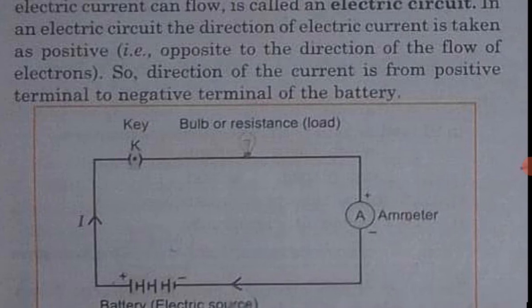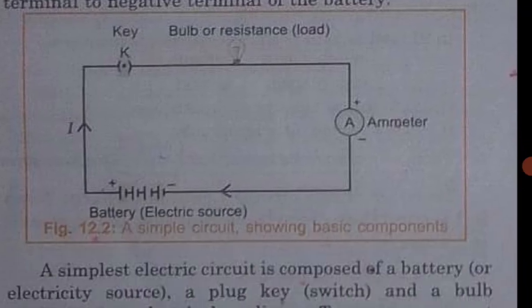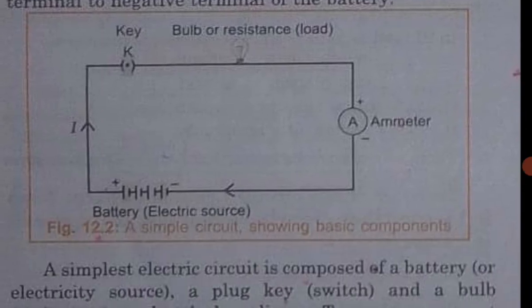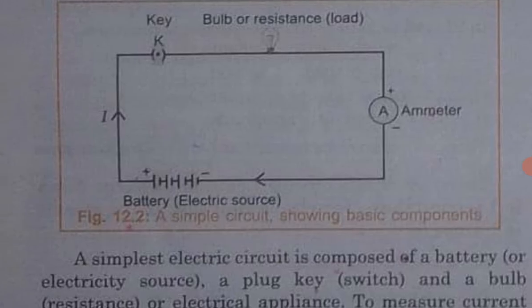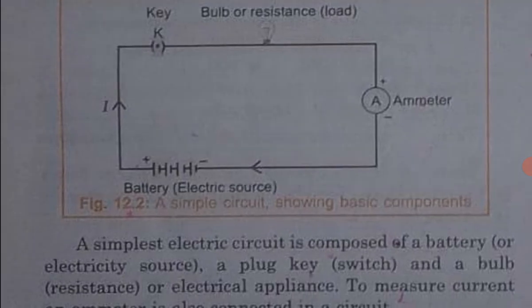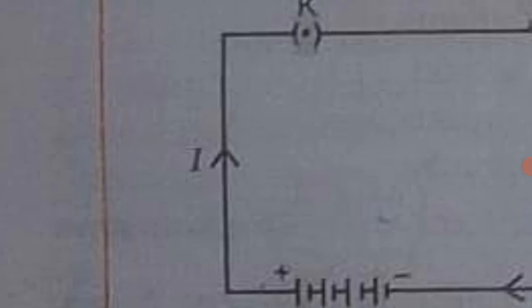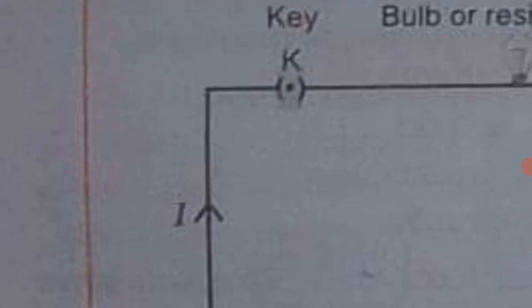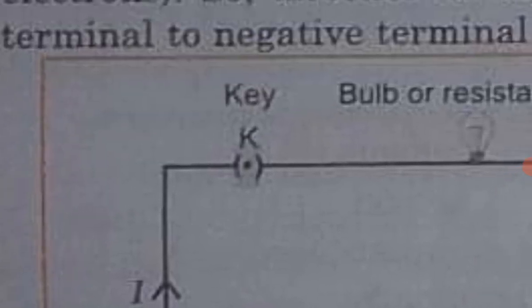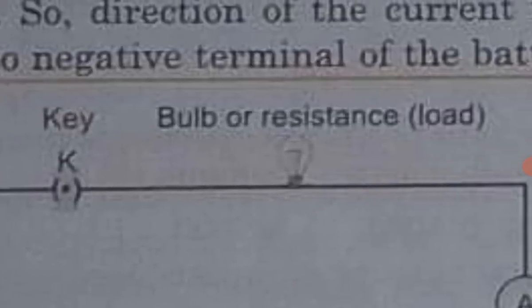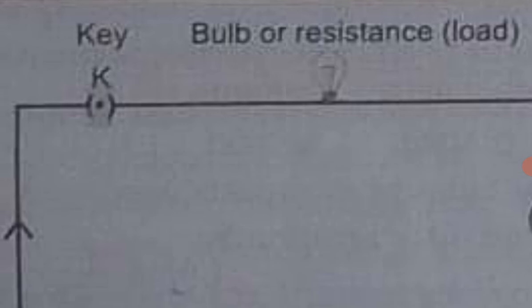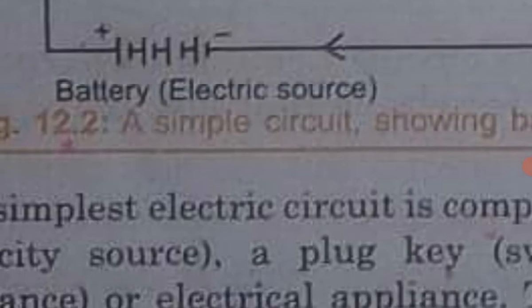Here is a diagram of a closed circuit. This is a battery, and this is a bulb or the electric device that is connected in the circuit.